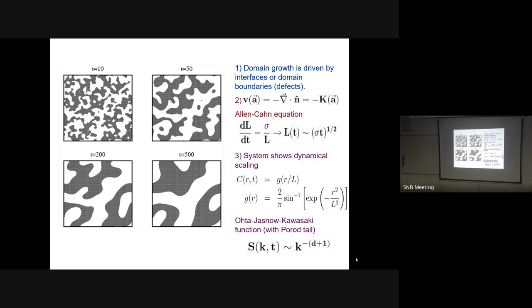Using defects as a handle to capture this pattern formation process, I wrote down the Allen-Cahn equation: the local velocity at a point is proportional to the curvature. A part of the interface that is popping out will go in, and a part that is popping in will come out - the interface locally becomes slack and finally goes away. Flat interfaces are stable. This is the Allen-Cahn equation for the non-conserved problem.